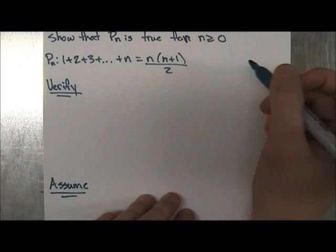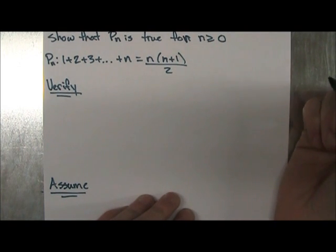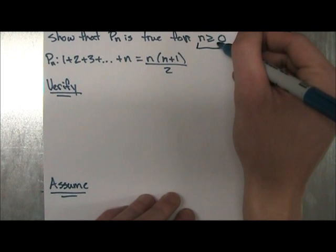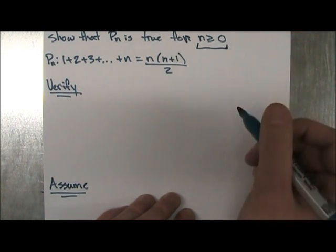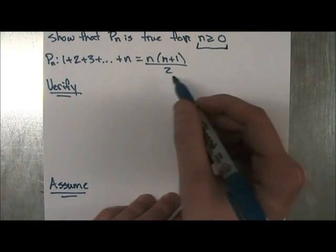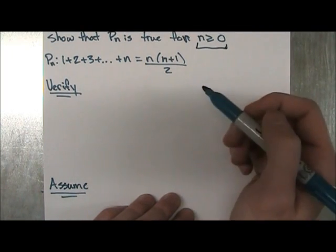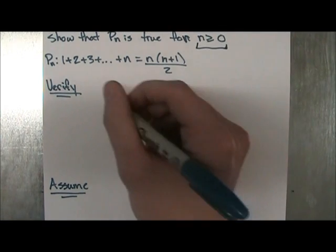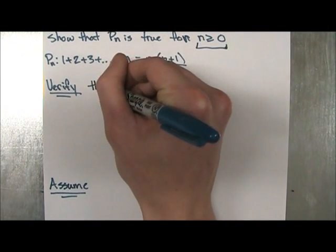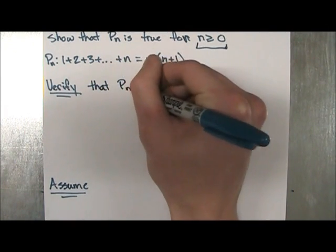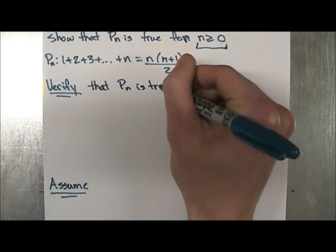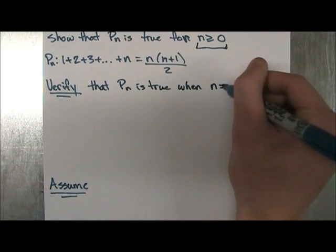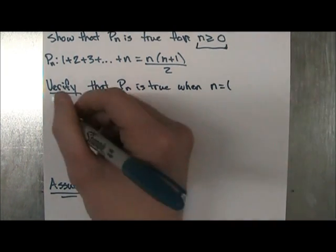So the first one, all you're going to do is pick an integer that is within the restriction, in our case n is greater or equal to zero. And you're going to plug it into our proposition, our statement, and verify that it's true. So we're going to verify that Pn is true when n is equal to 1.